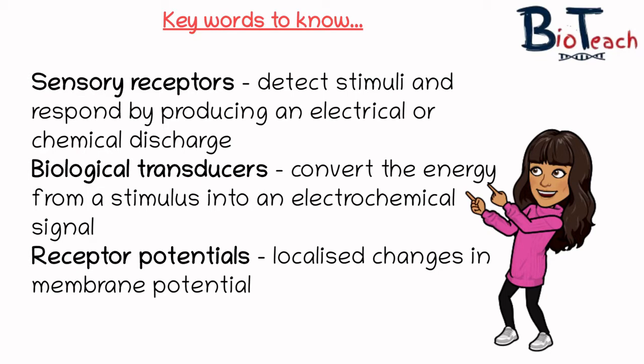Receptor potentials are graded and they're not self-propagating, but sense cells can amplify them depending on how strong the stimulus was, and so that can generate the action potentials. If you've not watched my video on resting and action potential already, then click the link on your screen now and watch that — it should make a bit more sense.